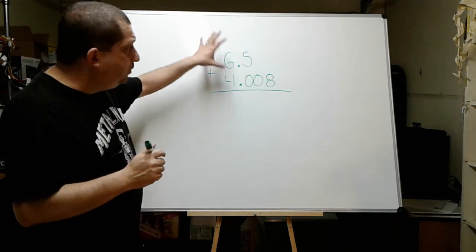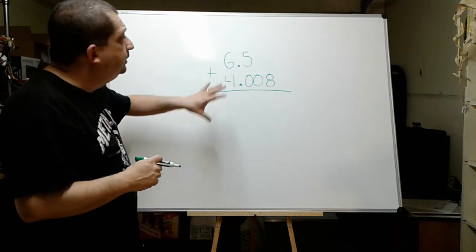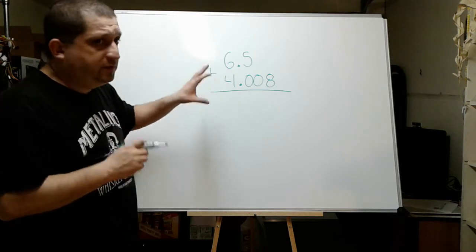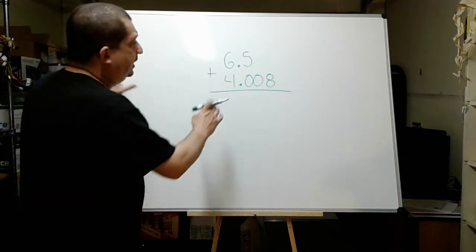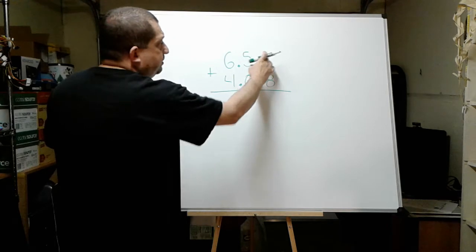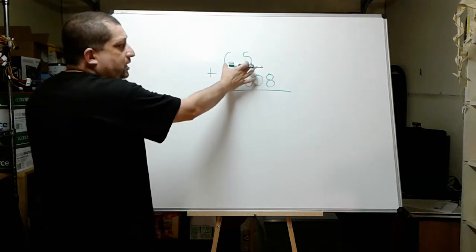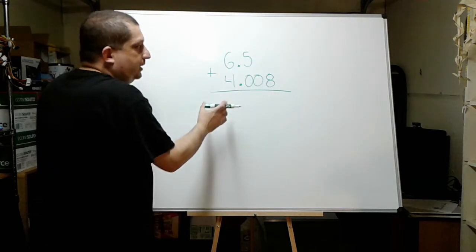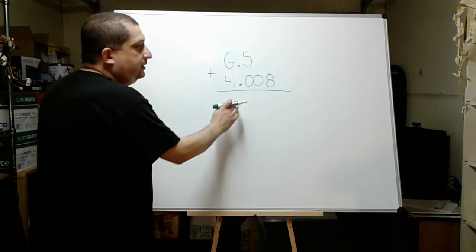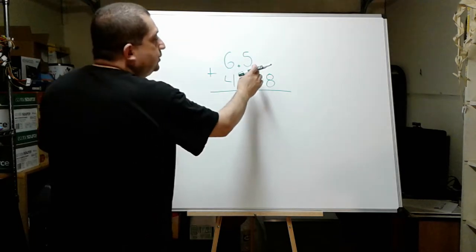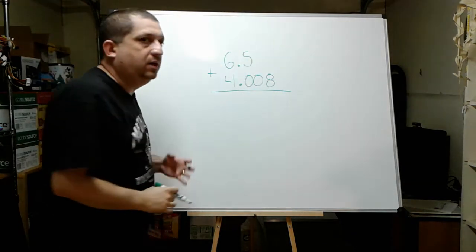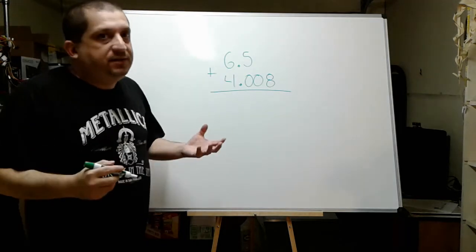Now, this number that I wrote, this operation right here, this problem that I wrote here is a little bit special. And I did it like this purposely. Because look, I have some empty spaces right here. It looks like this number is smaller, but it's really not. It just has less digits than this number right here. So I have two empty spaces in here. And what do we do with empty spaces?